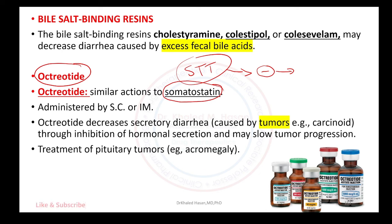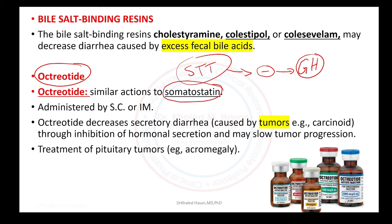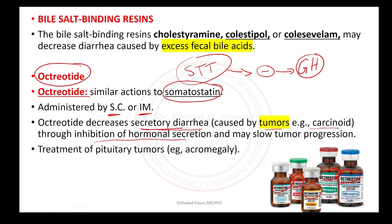The correct answer is growth hormone. Somatostatin is produced from the hypothalamus and inhibits secretion of growth hormone. Octreotide is available in several doses and can be prescribed subcutaneously or intramuscularly. It decreases secretory diarrhea caused by carcinoid tumors, by inhibiting hormonal secretion.